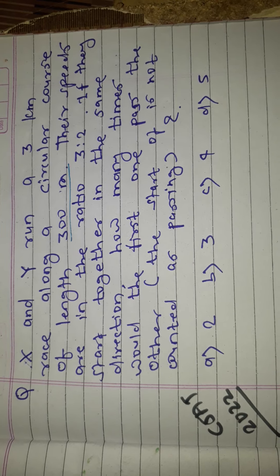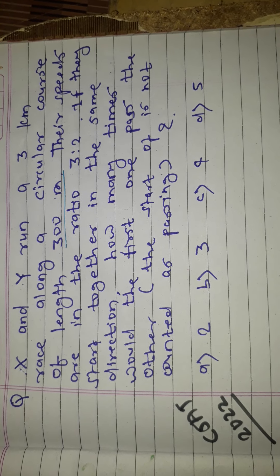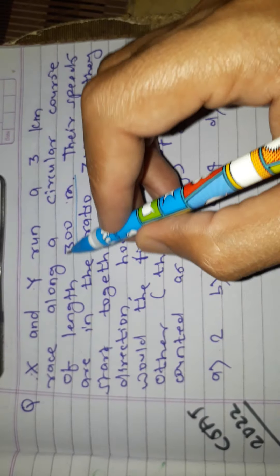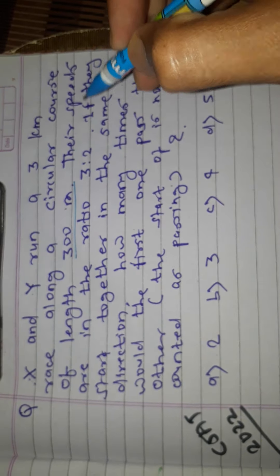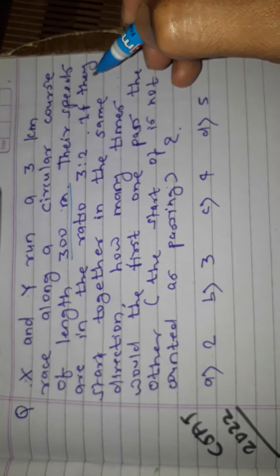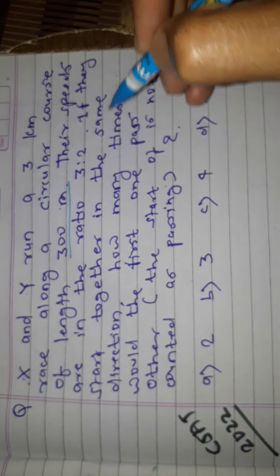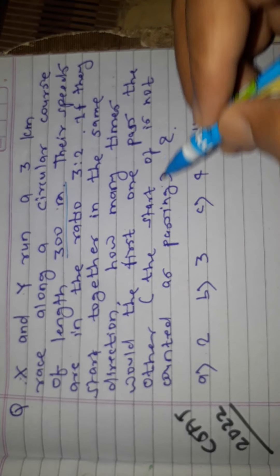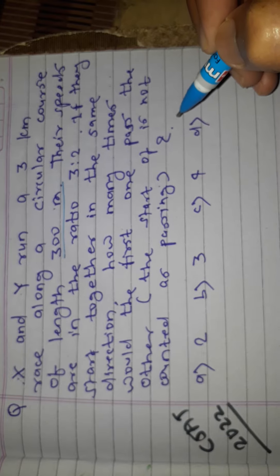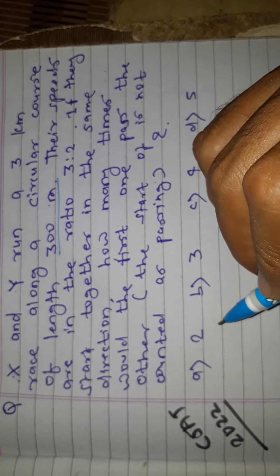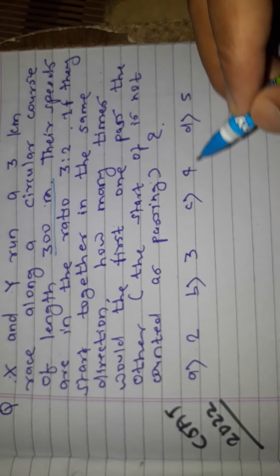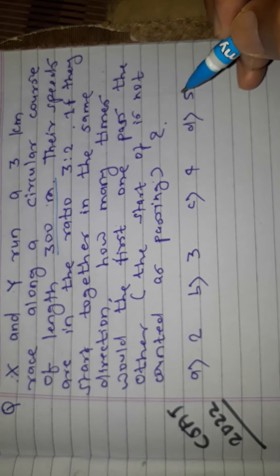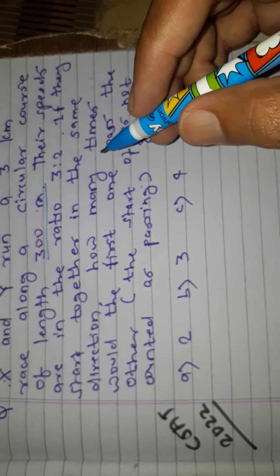Hello friends, today we are going to discuss a new topic. The topic is a C-side question that came in UPSC Prelims 2022. The question is: X and Y run a three kilometer race along a circular course of length 300 meters. Their speeds are in the ratio of 3 is to 2. If they start together in the same direction, how many times would the first one pass the other? The start is not counted as passing. Options: two times, three times, four times, or five times.